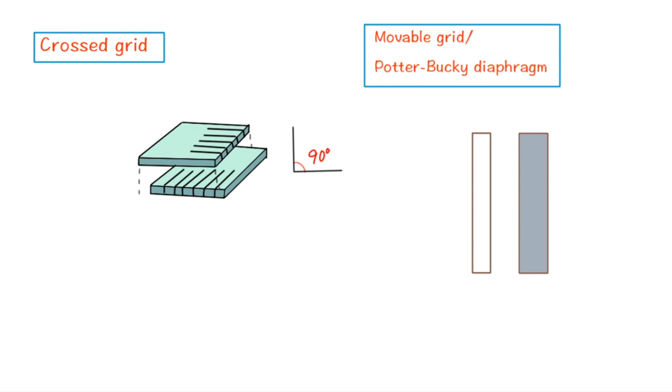Now, movable grid or Potter-Bucky diaphragm. If a stationary grid is used, the rays are absorbed by the lead strips and white lines appear on the film.